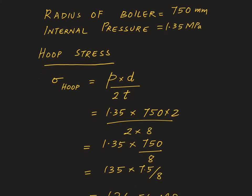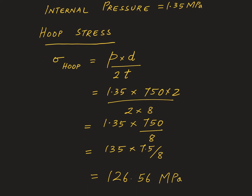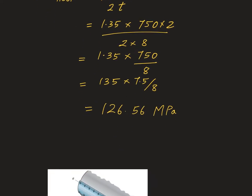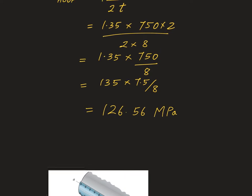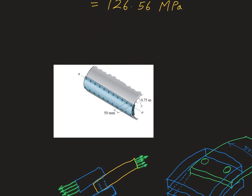The first question is pretty straightforward — they are asking you to compute the hoop stress. Hoop stress is given by the standard expression, which holds true because we are dealing with a thin-walled pressure vessel. If you plug in all the numbers properly, you get a value of 126.56 MPa as the answer.